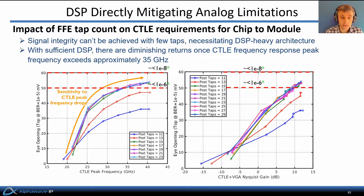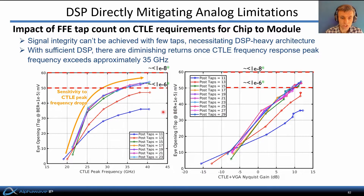In this analysis of 200 Gbps link performance, the CTLE peaking frequency and gain are swept for different numbers of equalization taps in the receiver. We see that signal integrity can't be assured unless we have at least 15 FFE taps. Once we have a sufficient number of equalizer taps, it would appear that we require about 35 gigahertz bandwidth in the CTLE to achieve an adequate bit error rate.